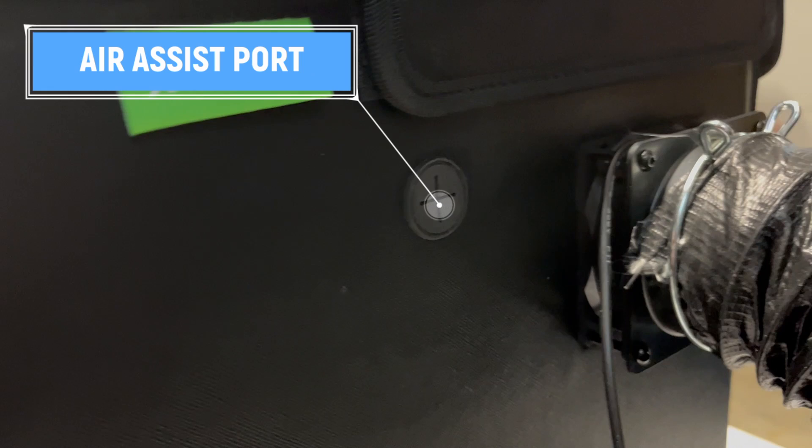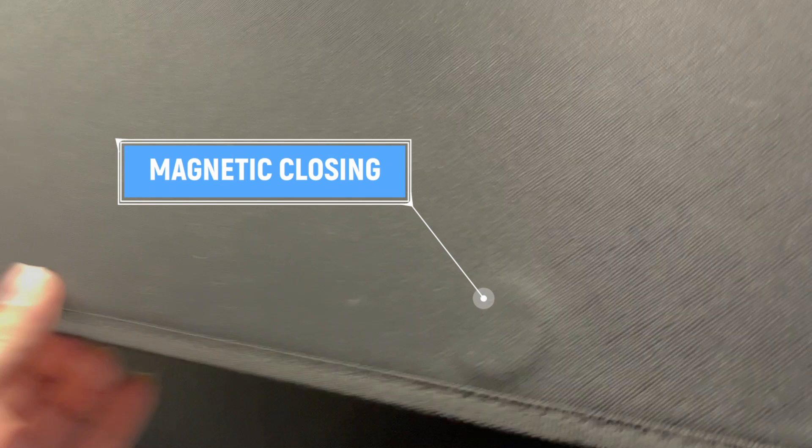Here we have our air assist port. And we have some magnetic enclosures. You can see the magnets right there. Not hidden very well. But, does the job.